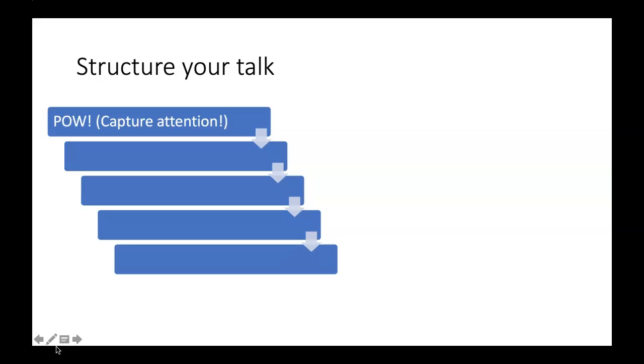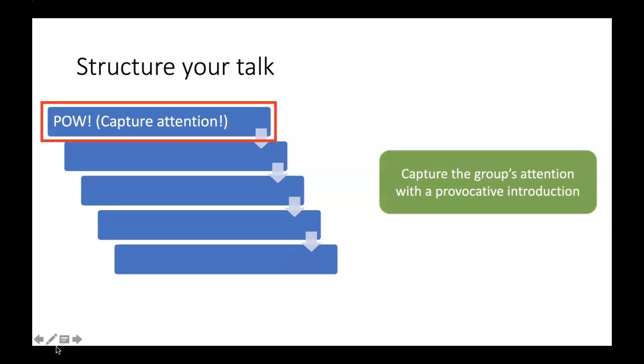So the first thing you want to do is pow, right? You want to capture people's attention. You want to capture the group's attention with a provocative introduction. What does a provocative introduction look like? You could ask the audience a thought-provoking question. You could use guided imagery. You could play sounds. You could recite a poem or a quote. You could tell a story. You could show a really cool or dramatic image. You could pull out an interesting or weird prop, something that just captures the audience's attention.